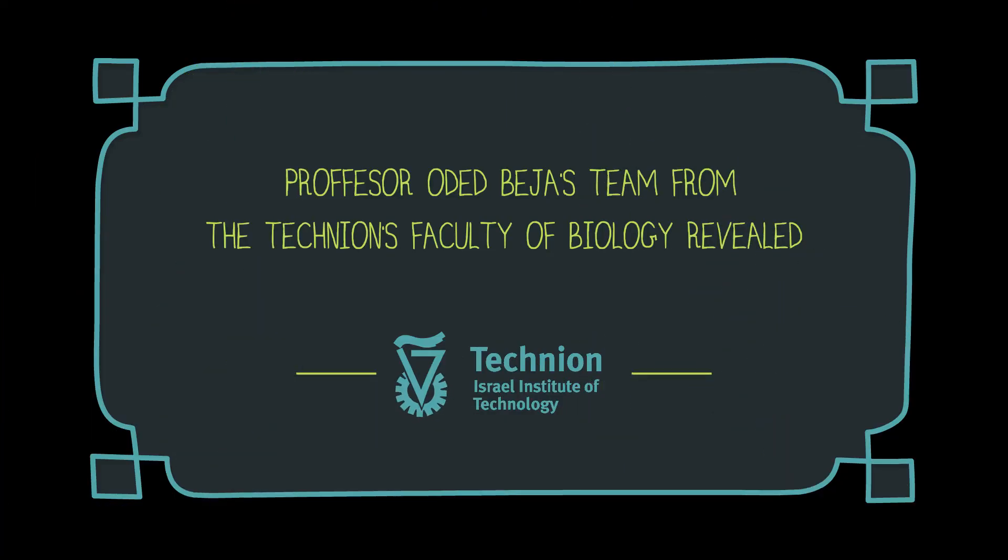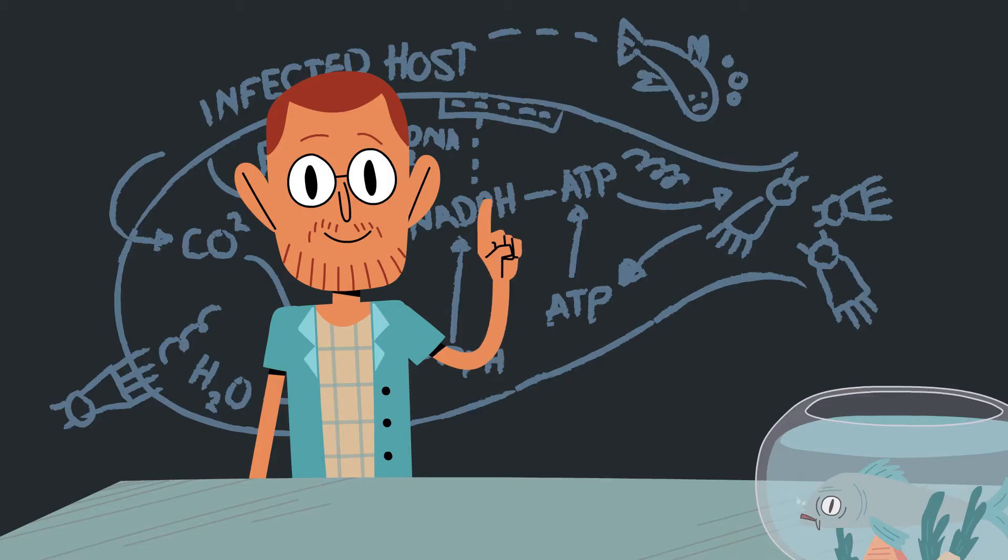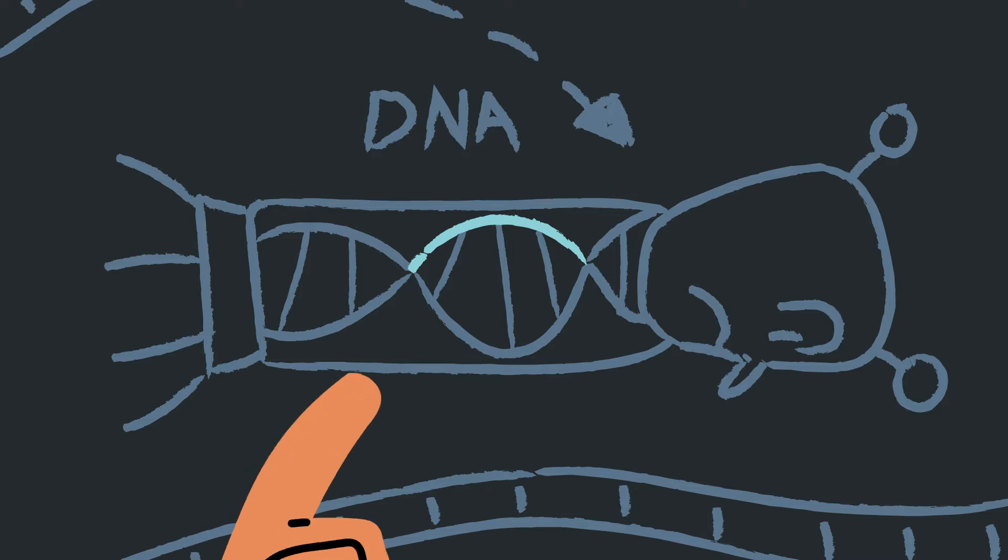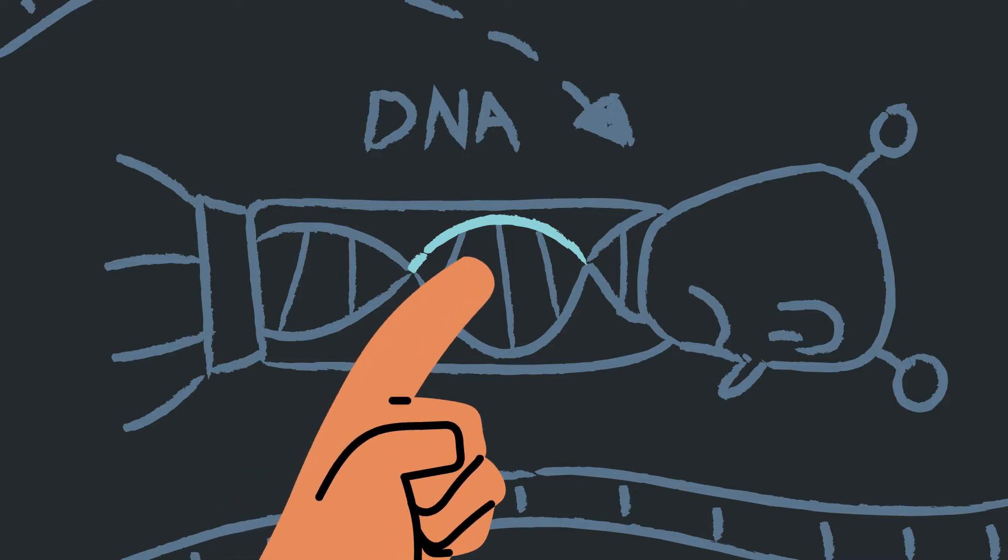In 2009, a research team led by Professor Oded Beja of the Technion's Faculty of Biology employed algorithms to discover the existence of viruses that carry genes for System 1 of the bacterial photosynthesis.